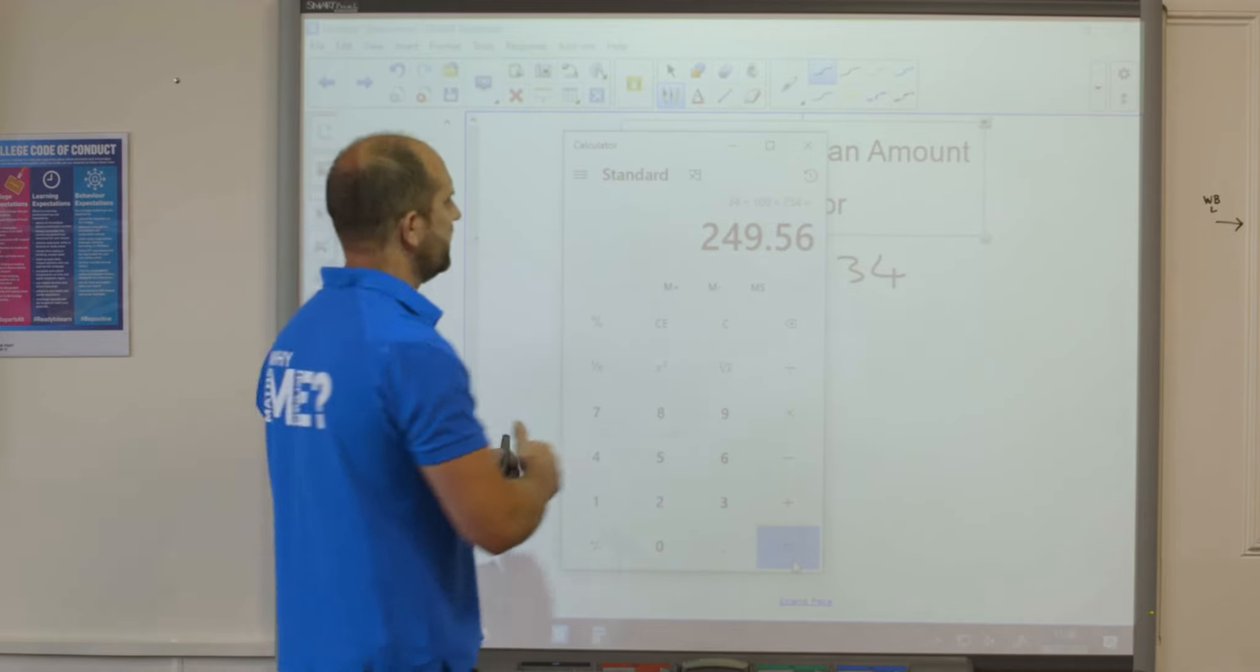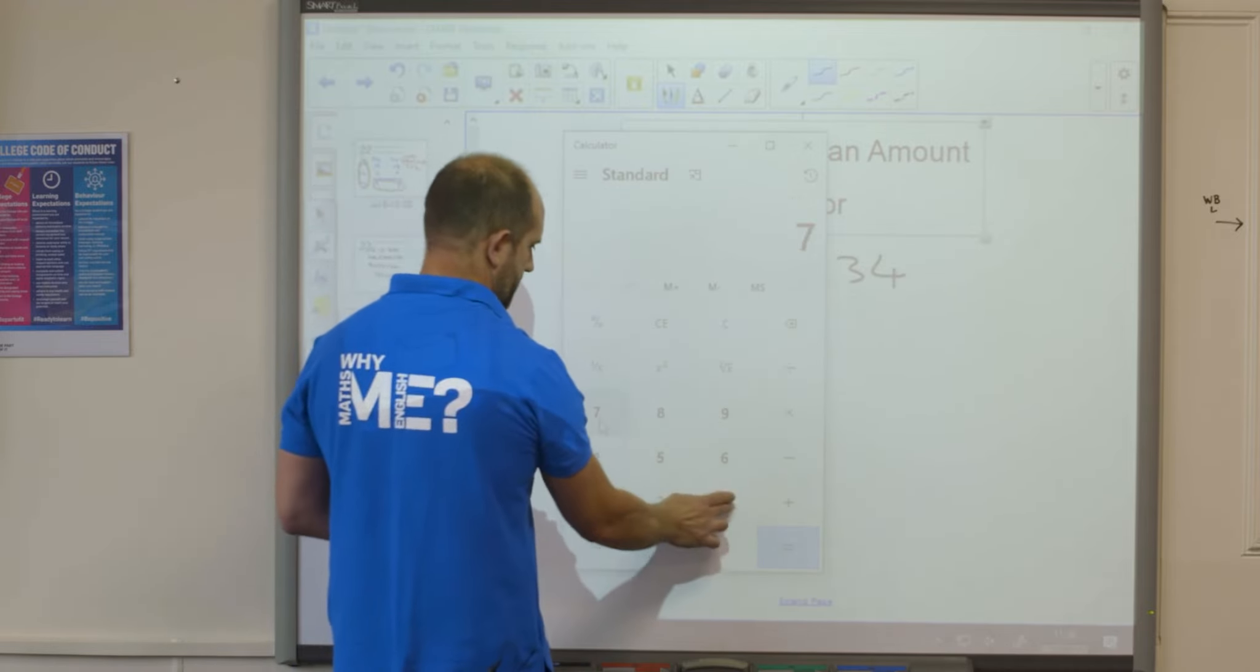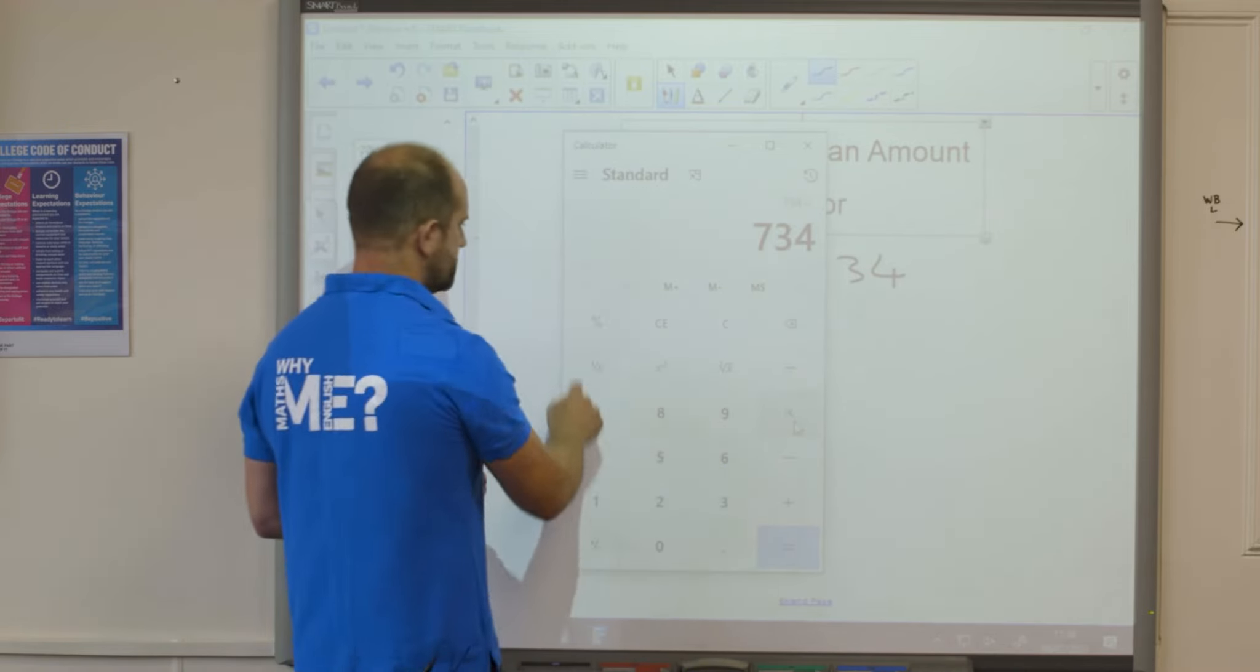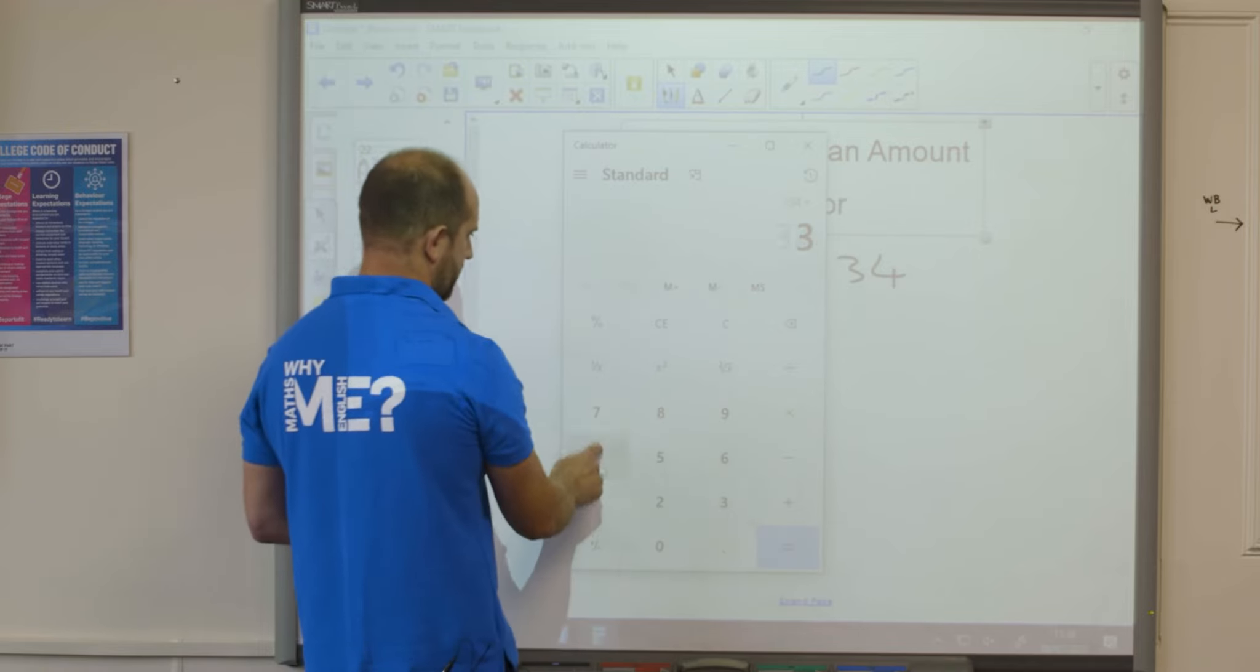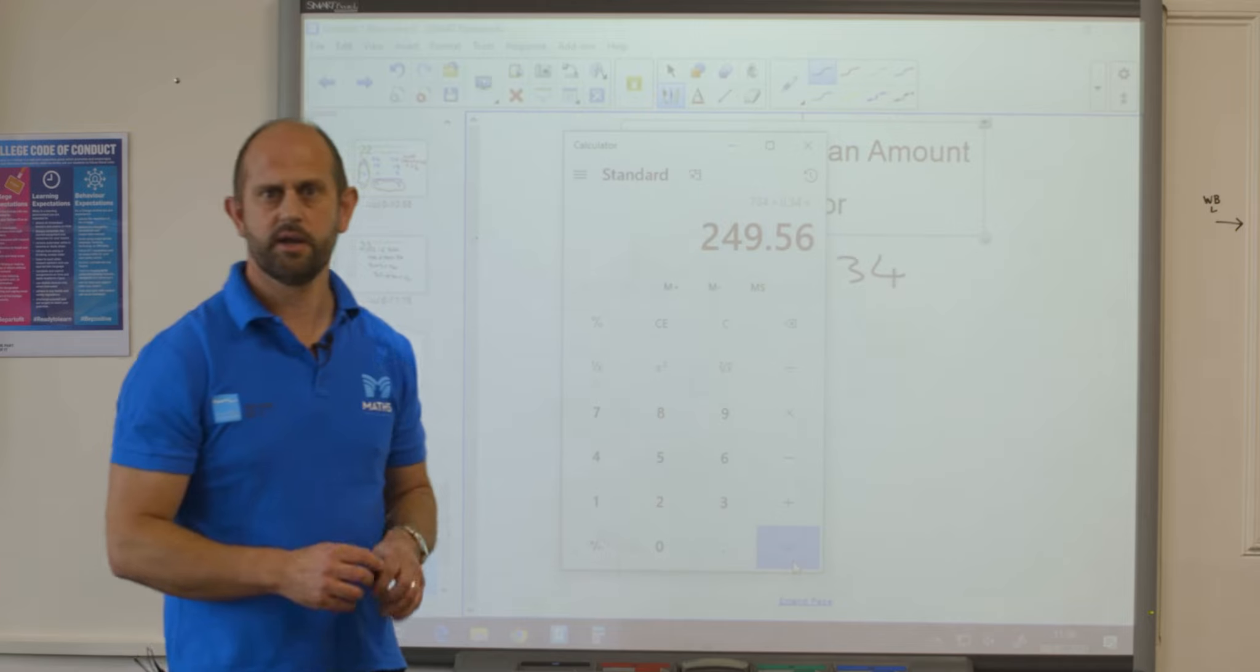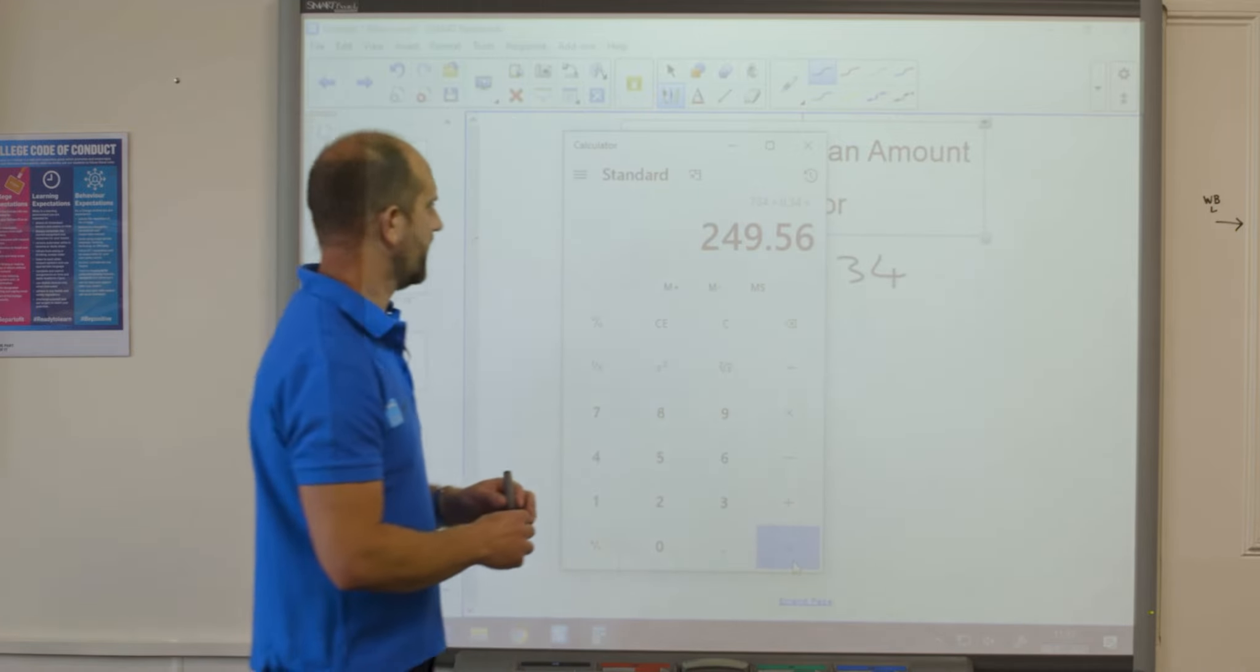Alternatively we can do 734 times 34 percent equals 249.56. The same answer. Two different ways of doing it.